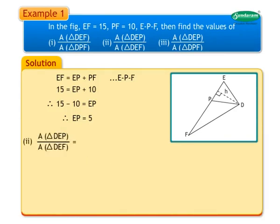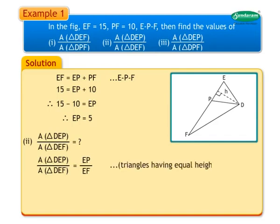Number 2: Find the ratio of area of triangle DEP upon area of triangle DEF. Area of triangle DEP upon area of triangle DEF is equal to EP upon EF, as they are triangles having equal height. Therefore, 5 upon 15 is equal to 1 upon 3.